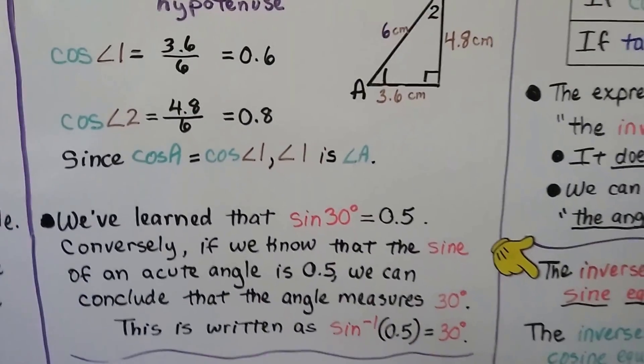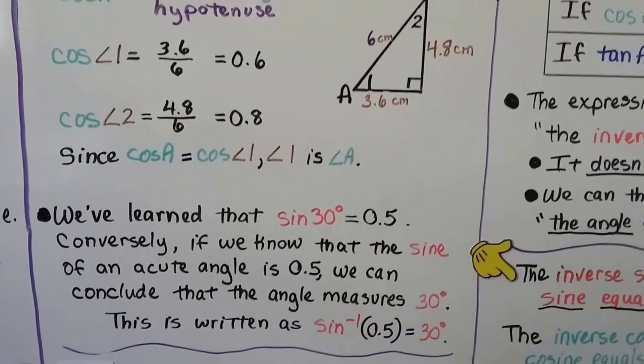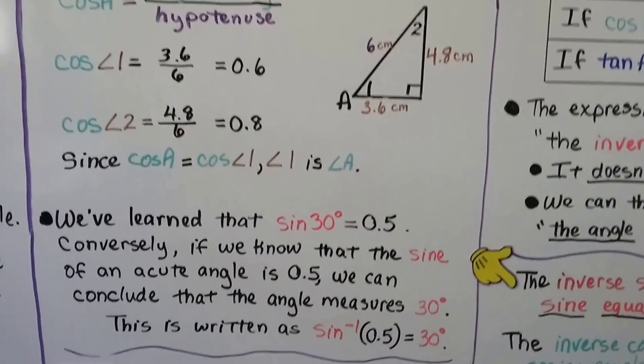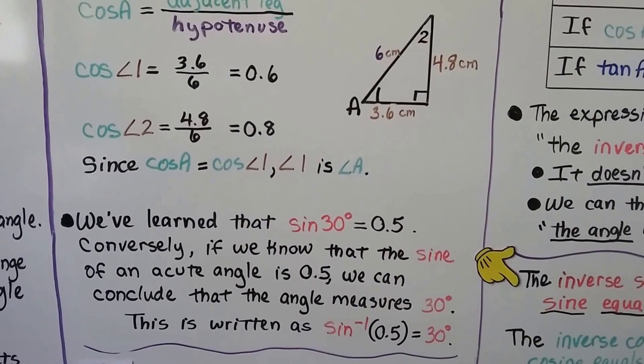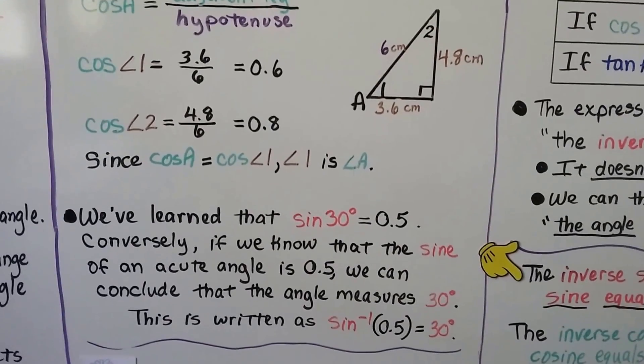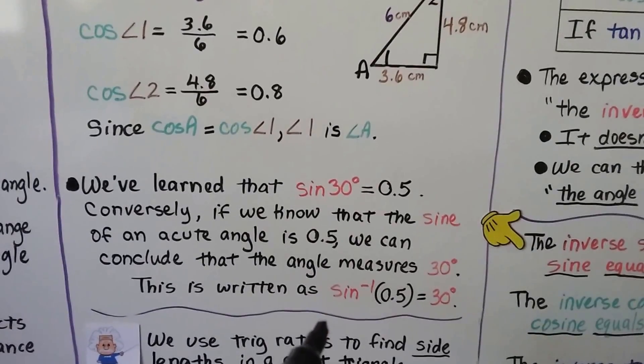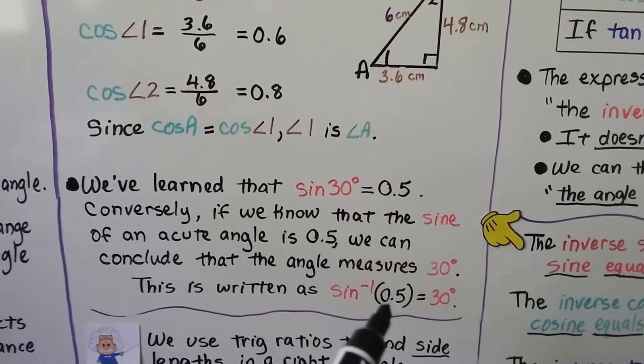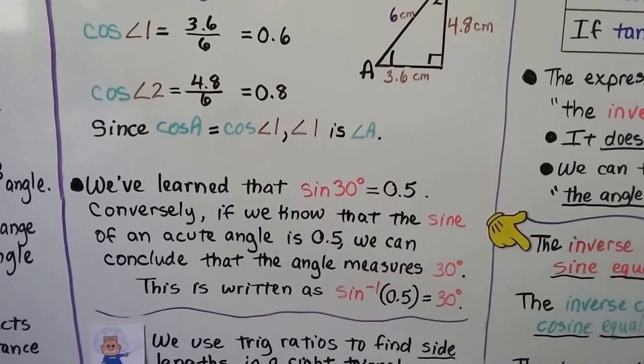In the previous videos, we've learned that the sine of 30 degrees equals 0.5. And conversely, if we know that the sine of an acute angle is 0.5, we conclude that the angle measures 30 degrees. This is written as the inverse sine of 0.5 equals 30 degrees.